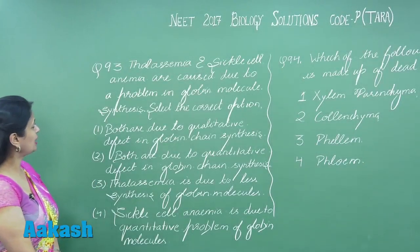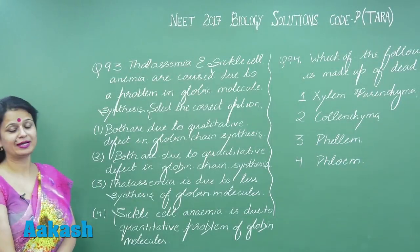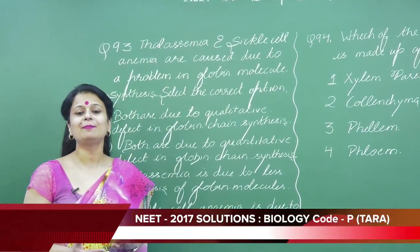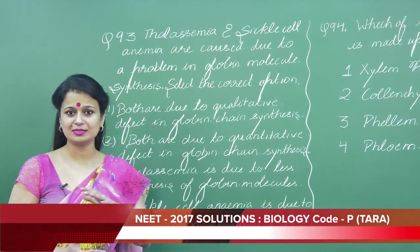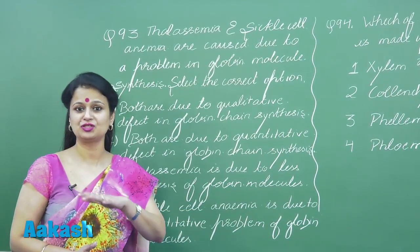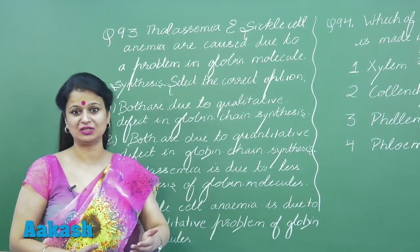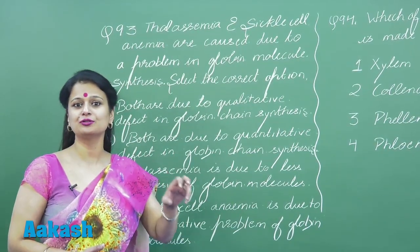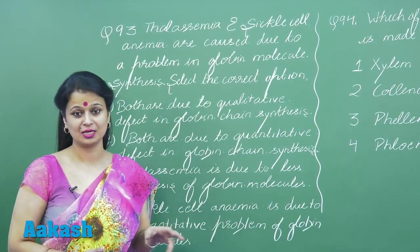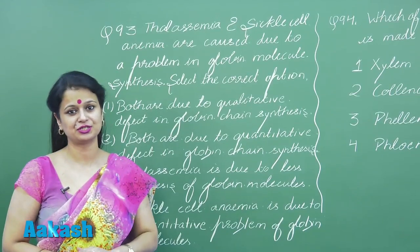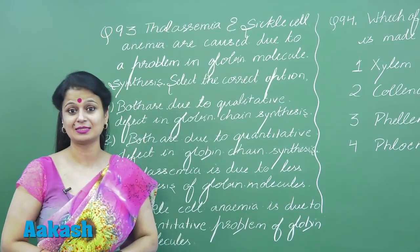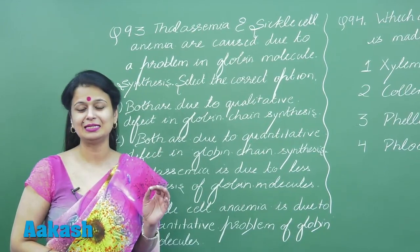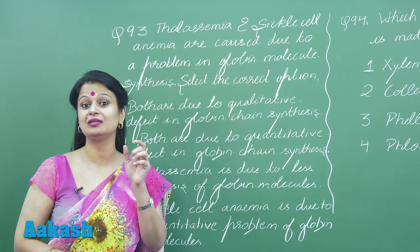In question number 93, we have to look for the right option for thalassemia and sickle cell anemia. In sickle cell anemia, the beta globin chain present in hemoglobin undergoes a structural change — at the sixth position, instead of glutamic acid, there is presence of valine. So sickle cell anemia involves a change in the globin chain structure.